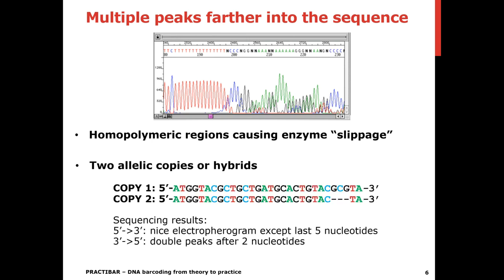And another possibility is that you have two allelic copies of your loci into your sample. For instance, you can have different chloroplast copies or different mitochondrial copies, or you're dealing with hybrids. So for instance if you're then looking through nuclear ITS and there are two different ITS sequences into the nuclear DNA.